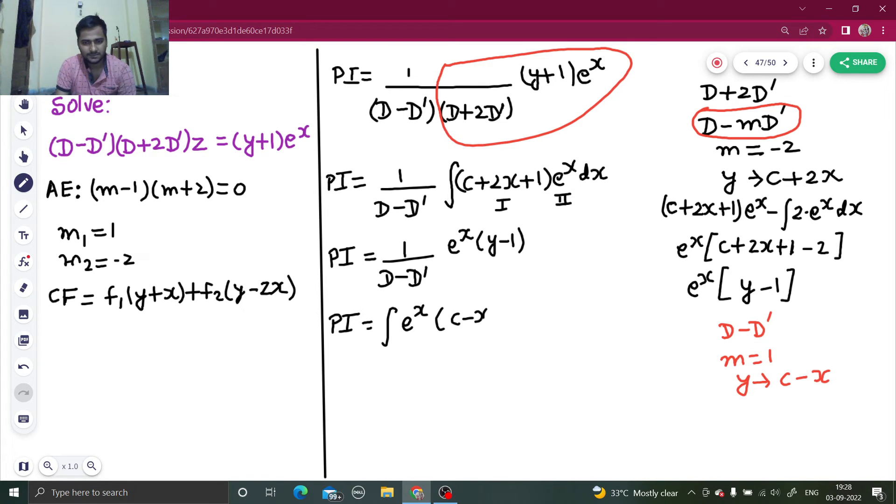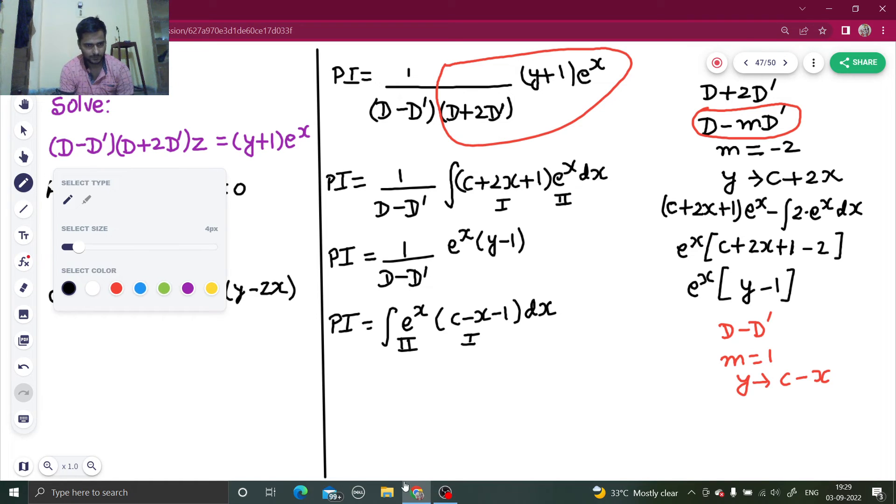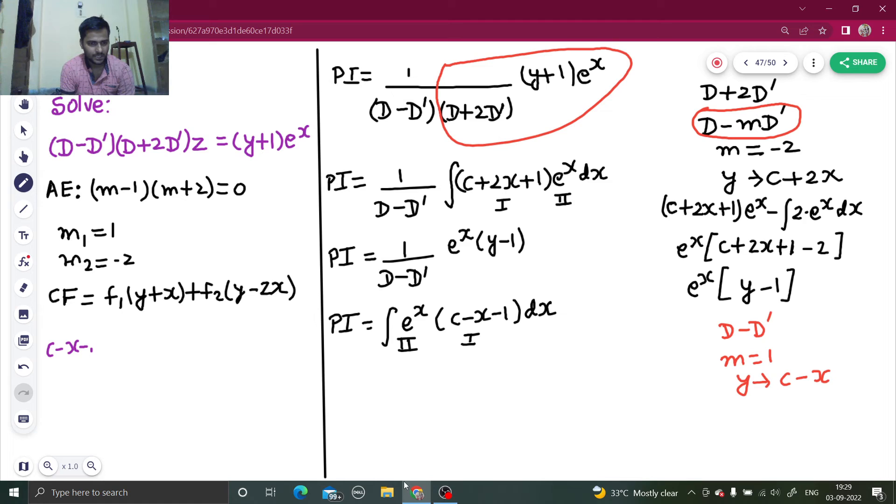E^x, I will use integration by parts, taking this as the first function, this as the second function. First function as it is, integration of e^x is e^x minus integration of derivative. c minus x minus 1 is minus 1, so this will make this plus. Integration of e^x is e^x, one integration.